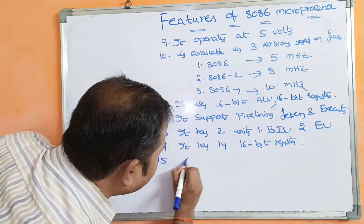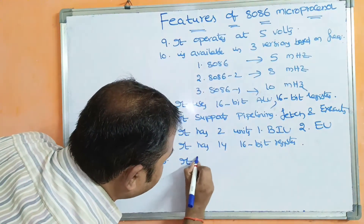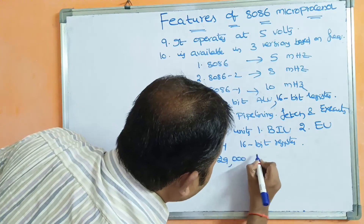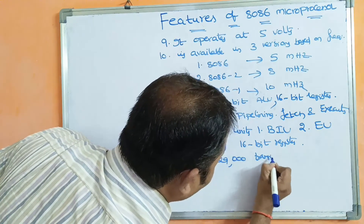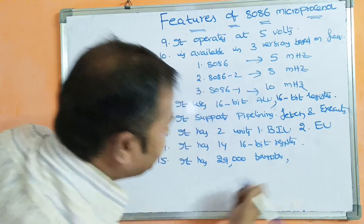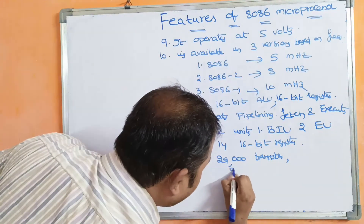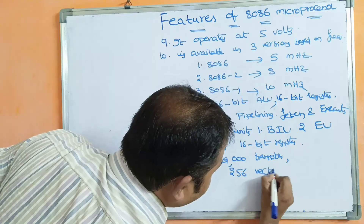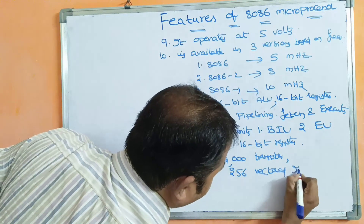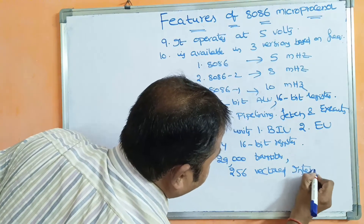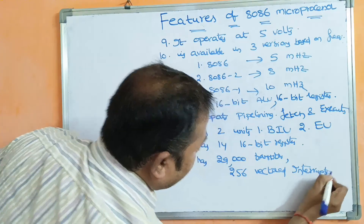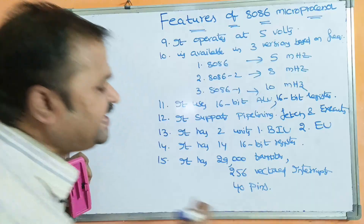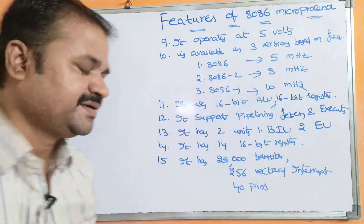The 8086 has 29,000 transistors and 256 vectored interrupts. It also has 40 pins, where each pin has a specific functionality.